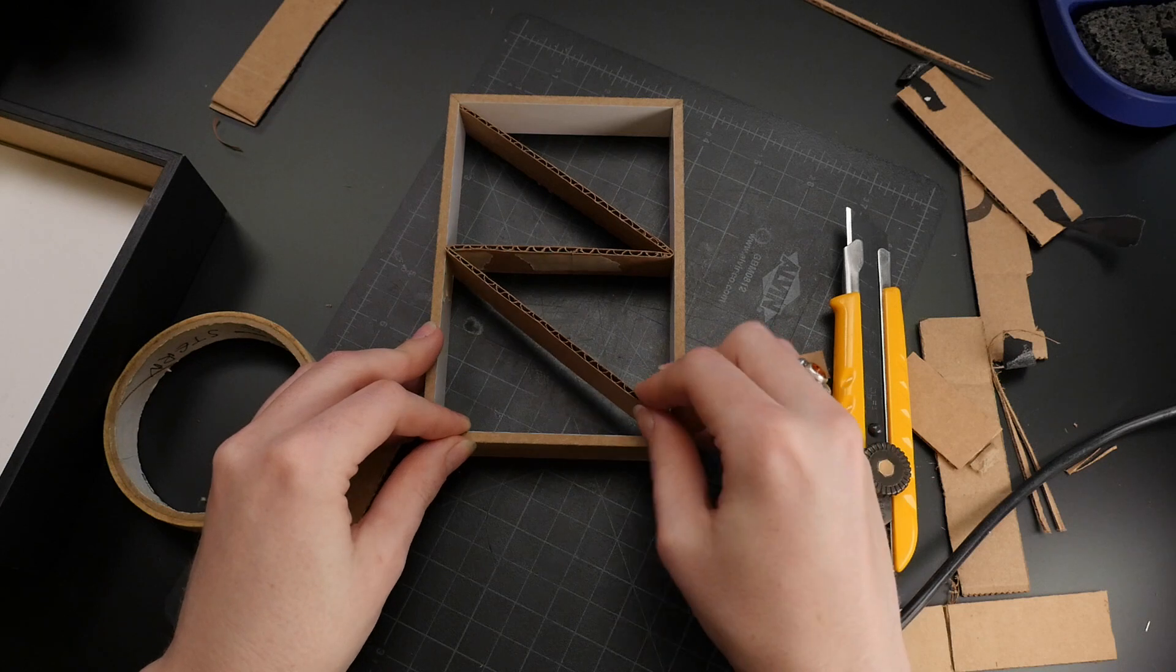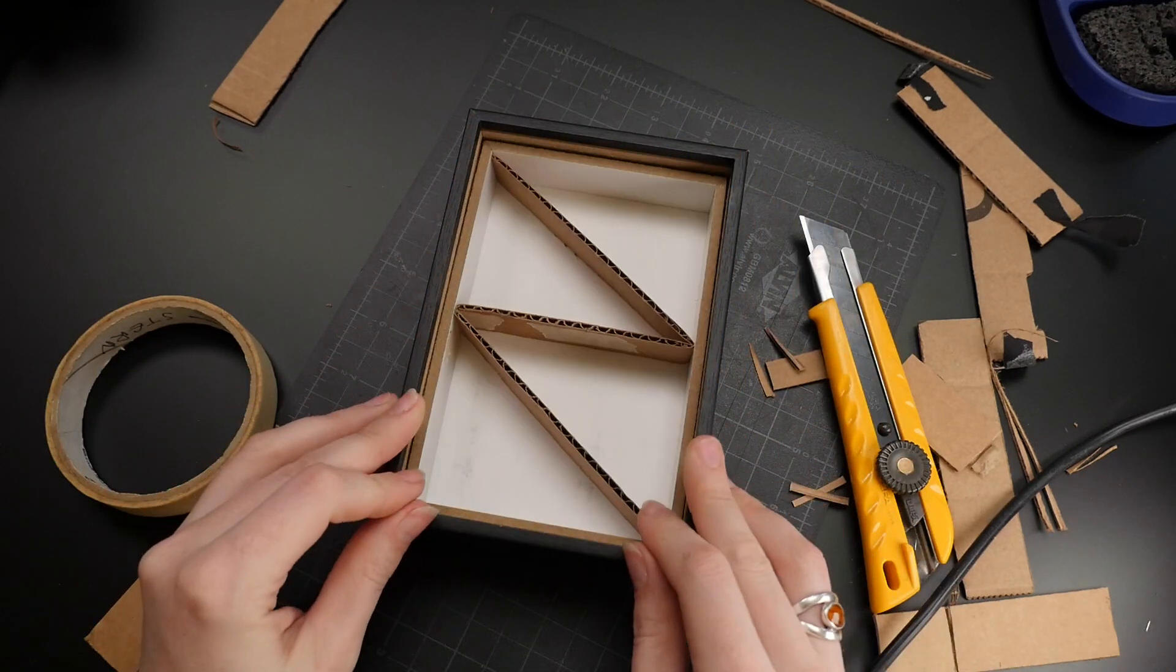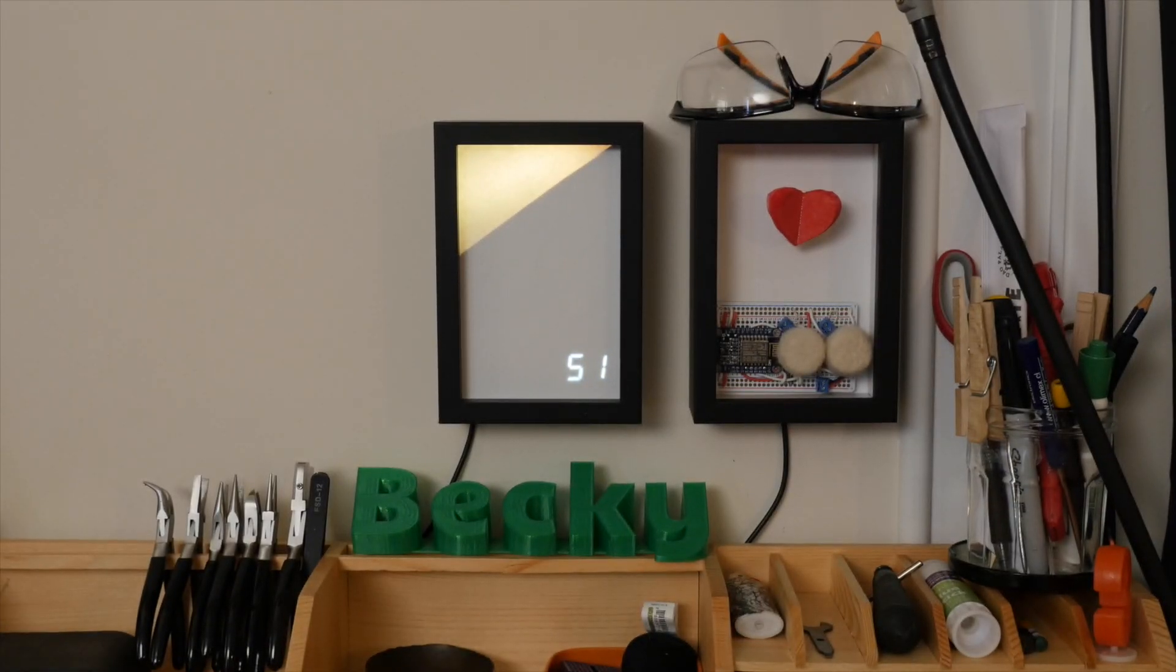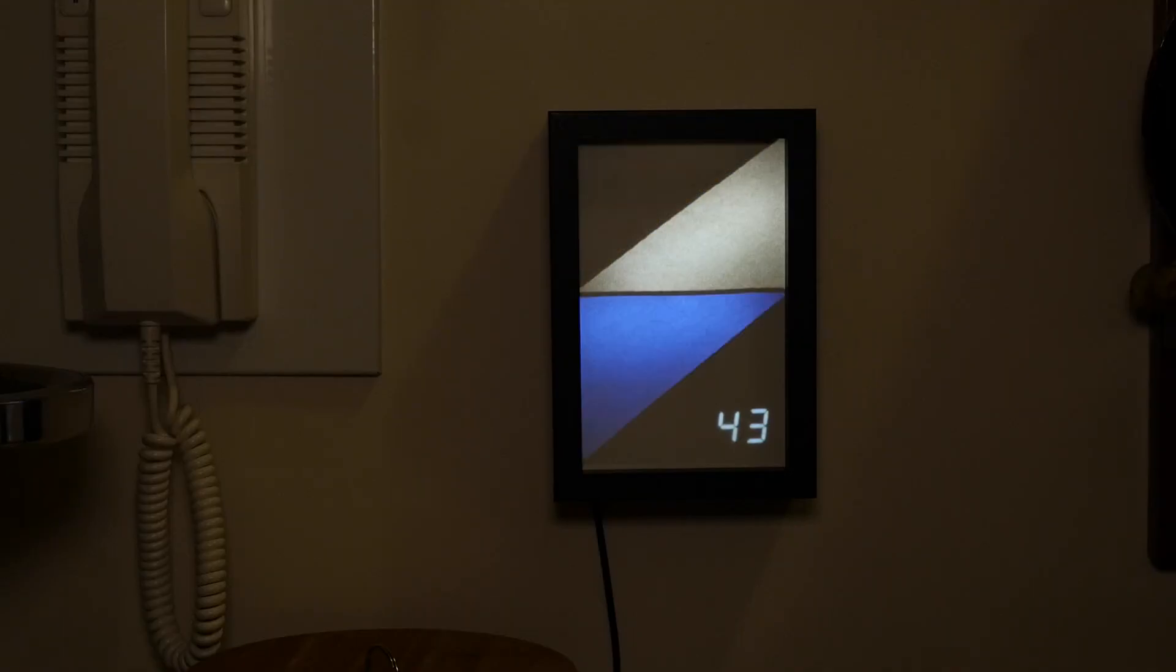To enclose the circuit, I used a simple shadow box. A piece of white paper makes a perfect diffuser for the front, and I like the way the 7-segment display looks behind the paper, and the shadow box gives the NeoPixels some much-needed space to diffuse.